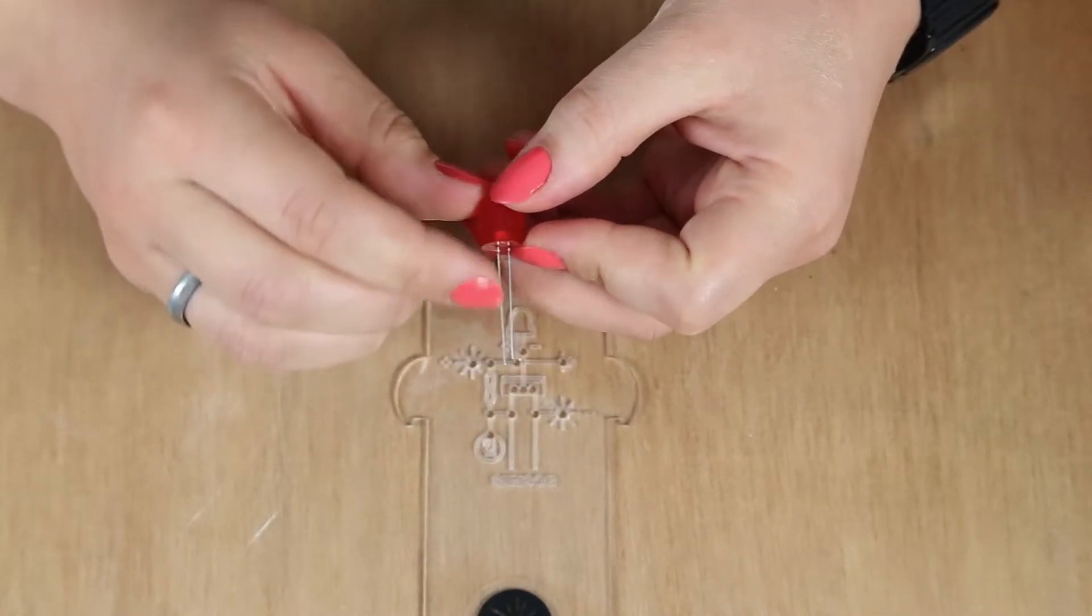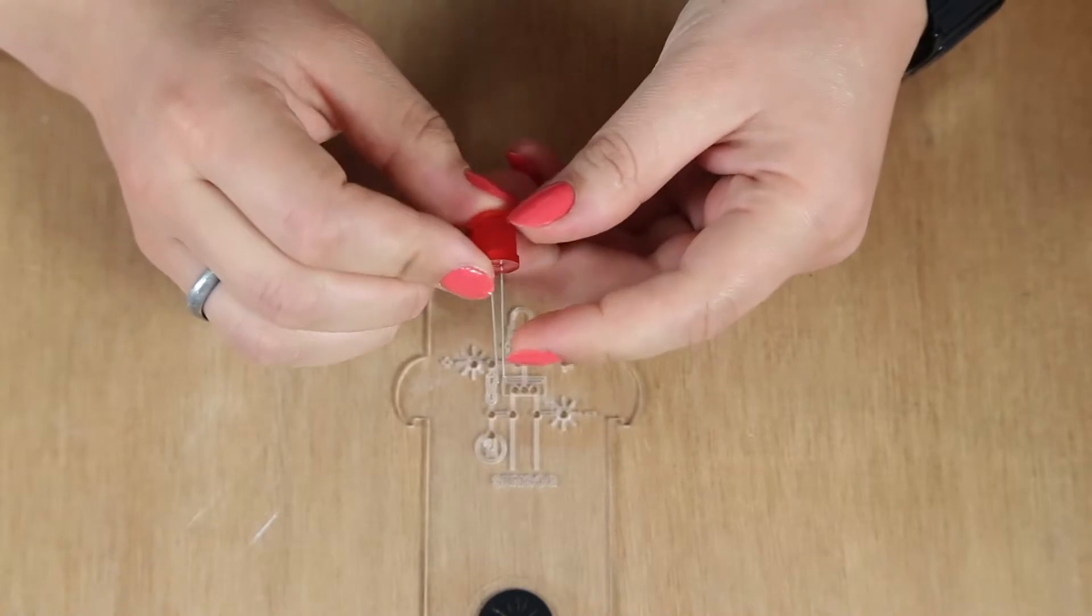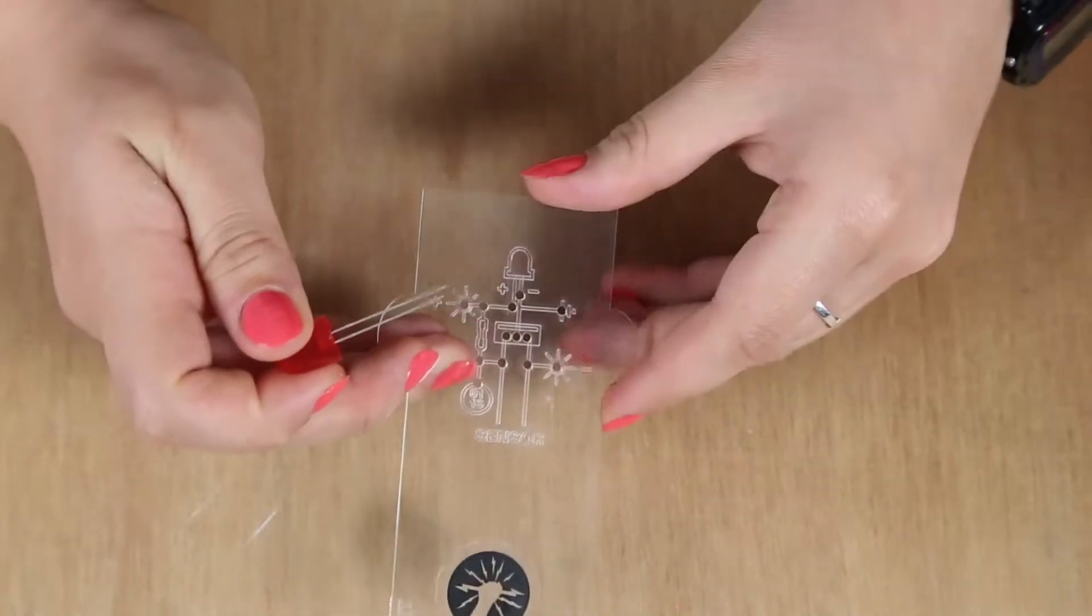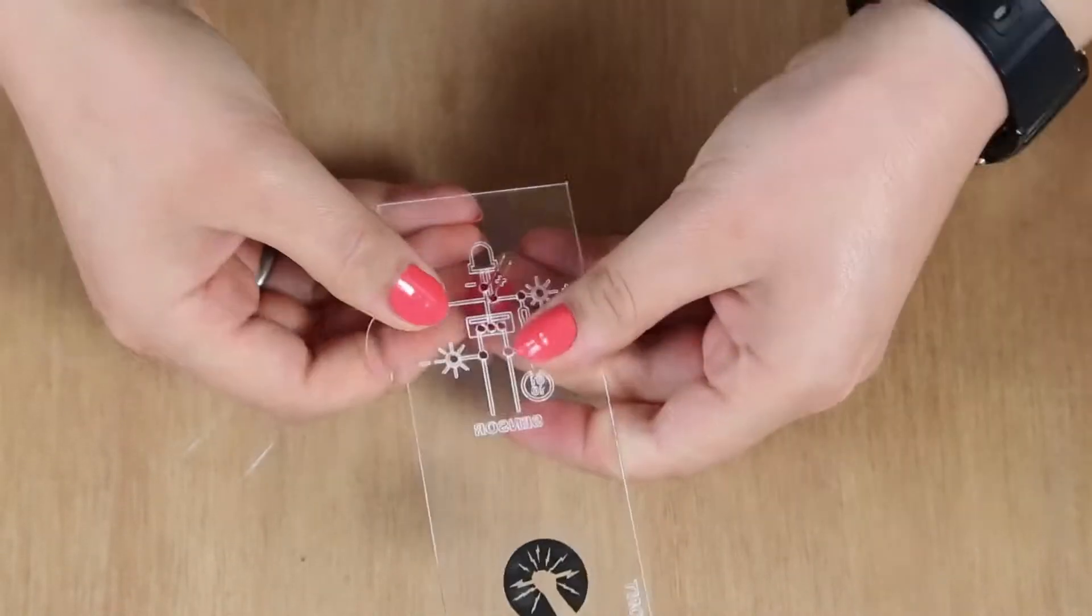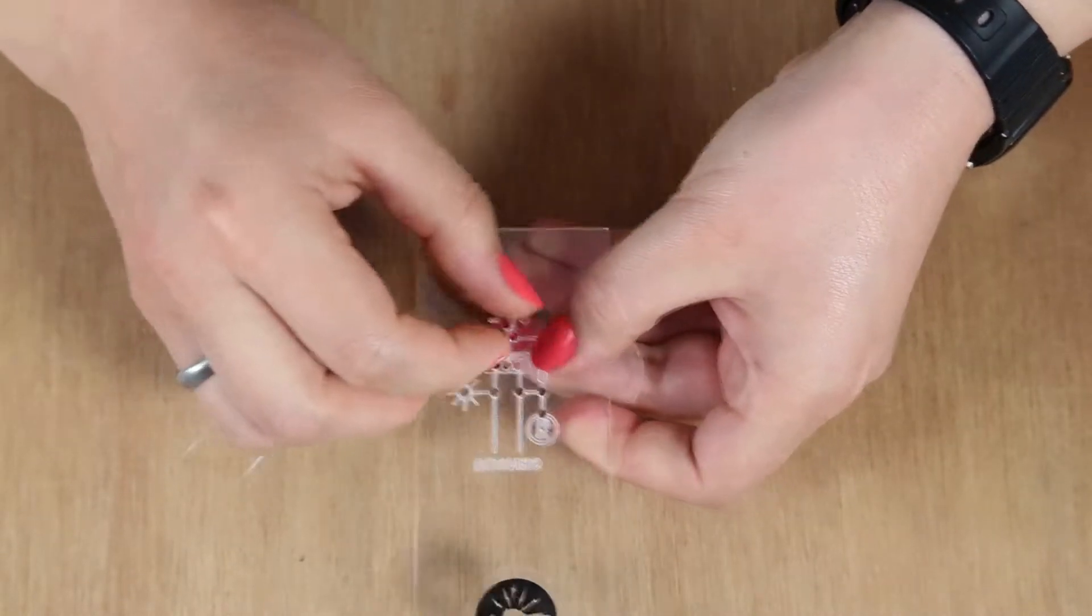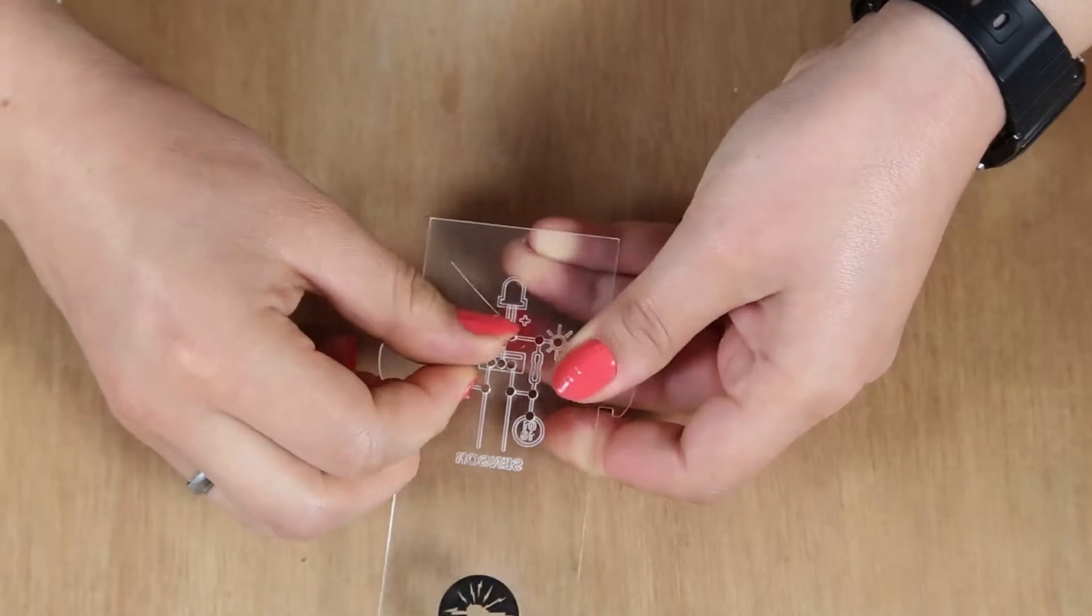So the long leg is for positive and the short leg is for negative. We've made this easy for you by putting a positive and negative sign on the board to help keep the component in place if you just bend them 45 degrees.